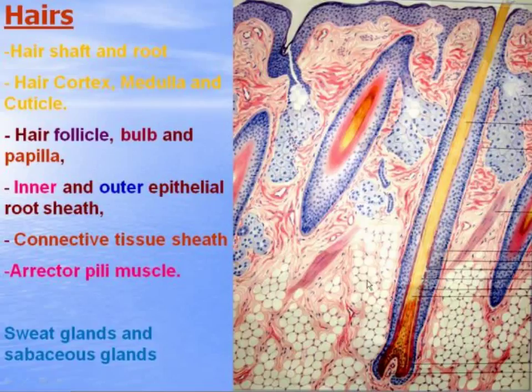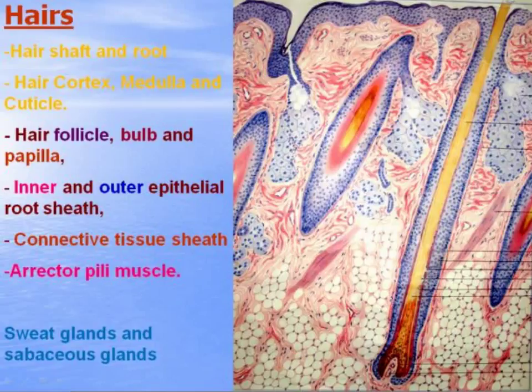There are inner and outer epithelial root sheaths. The outer epithelial root sheath is a continuation of the epidermis of skin. Outside the follicle there is a connective tissue sheath. There is also an erector pili muscle — bundles of smooth muscle cells — when they contract they erect the hairs. There are sweat glands in the deeper portion of the dermis and sebaceous glands more superficially.